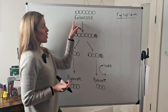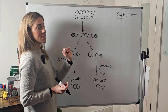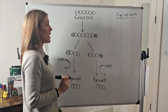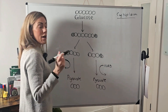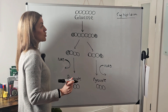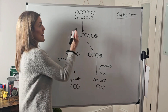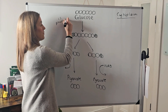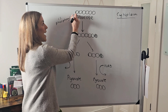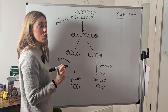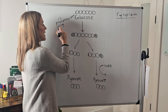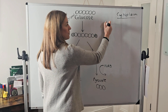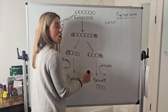Glycolysis starts with glucose as the substrate. Glucose has six carbons, represented by the circles in the diagram. The first thing to say in a written description of glycolysis is that glucose is phosphorylated. We're going to add phosphate groups to glucose, and this is done using ATP — we need two ATP at the start of glycolysis.